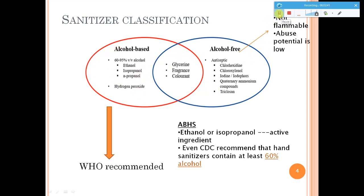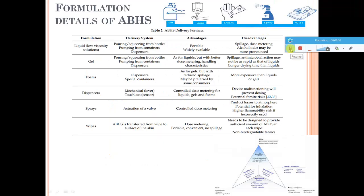The Center for Disease Control also recommends the use of alcohol-based sanitizers with at least 60% alcohol. Coming to the formulation details of alcohol-based sanitizers, we have sanitizers available in different forms — foam, gel, cream, sprays, and wipes. Here are details on the different formulation types, their delivery systems, and the advantages and disadvantages of each.